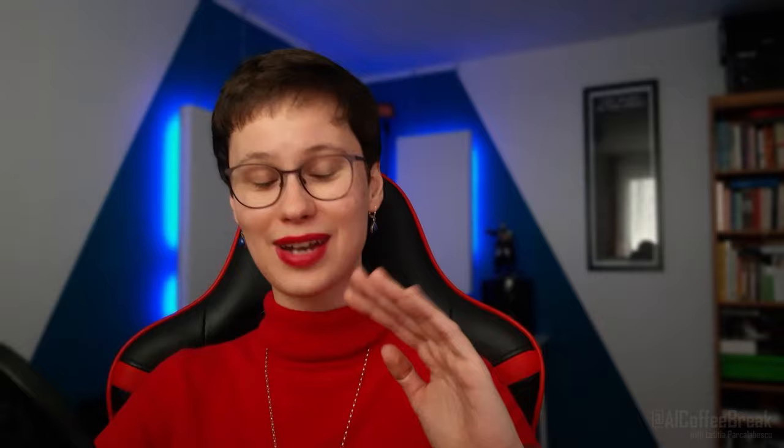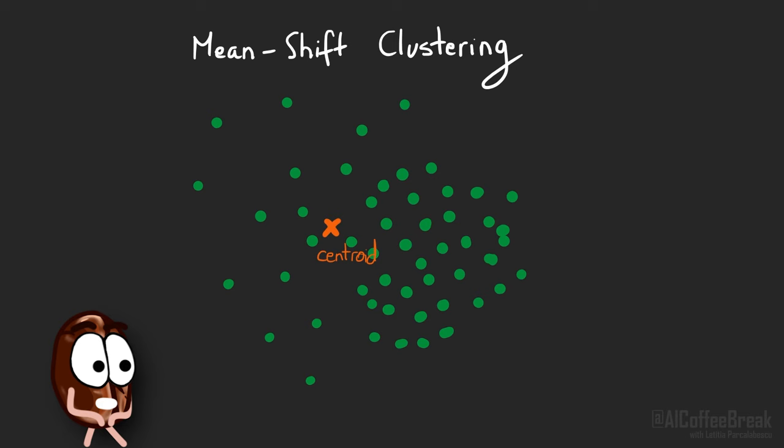Well, the explanation is kind of lengthy, so sit down. It's because attention might be performing something similar to mean-shift clustering. What is mean-shift clustering? Well, mean-shift clustering works by computing centroids for each cluster.